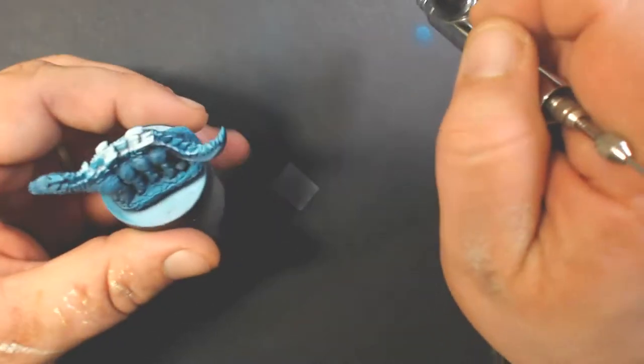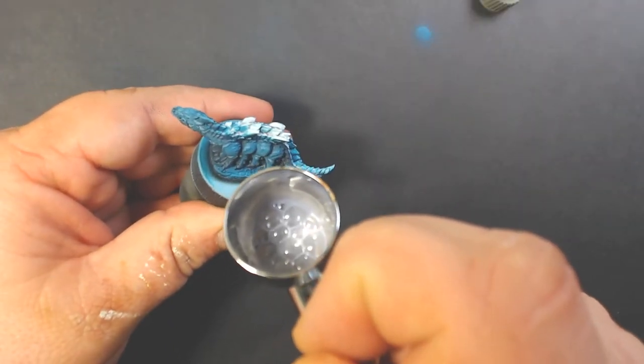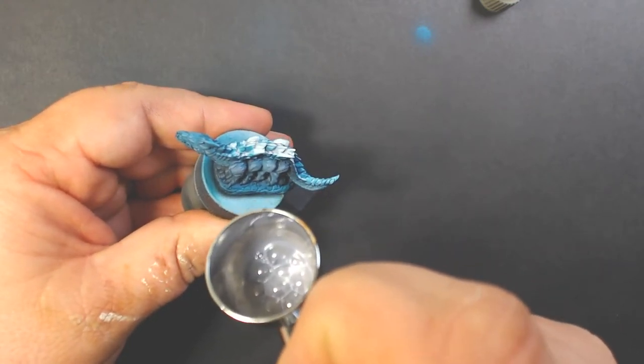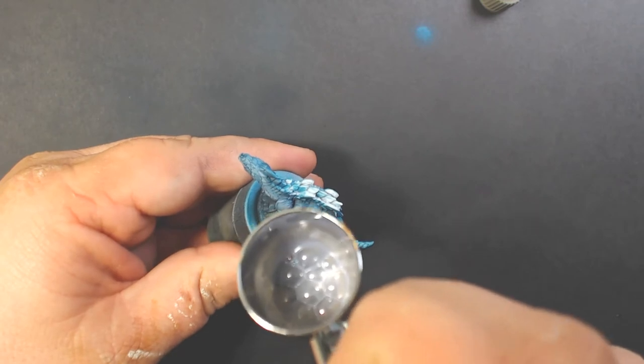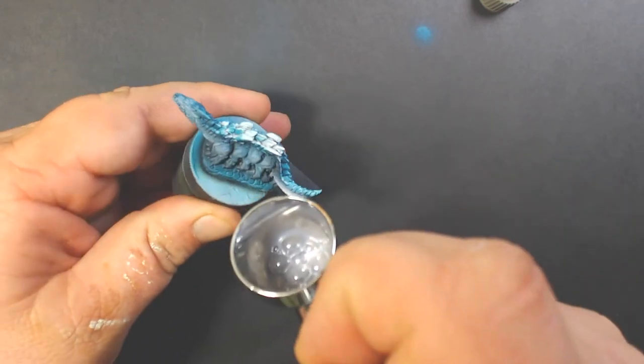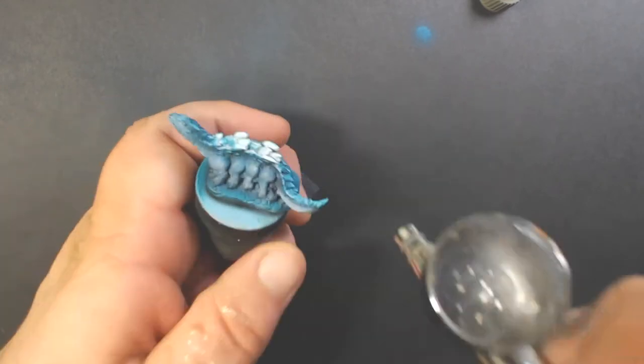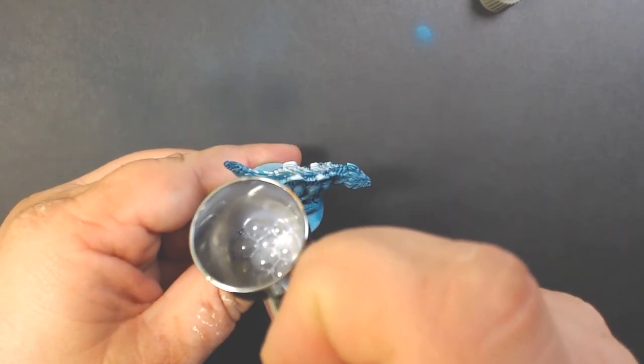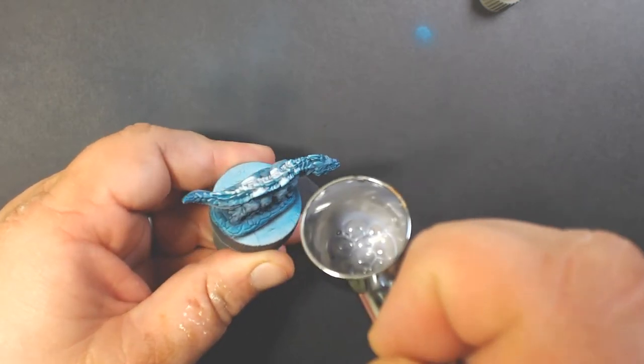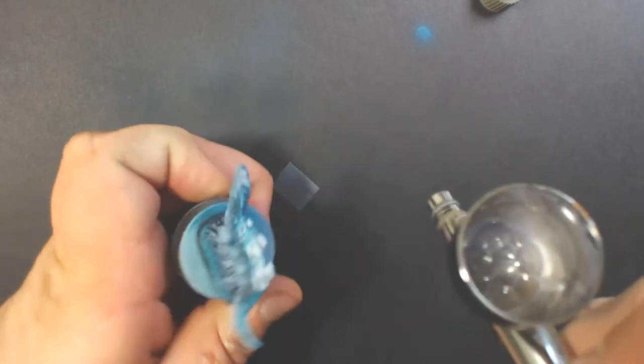Next up we're using straight Lindanis Gray and just bringing that highlight out a little more. I don't want to cover up all the previous highlight, but trying to focus more on where we think the light would shine the most.